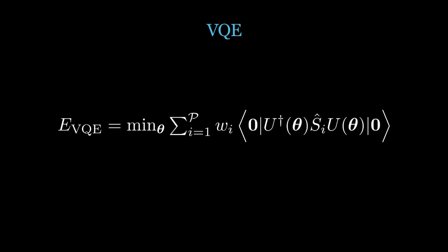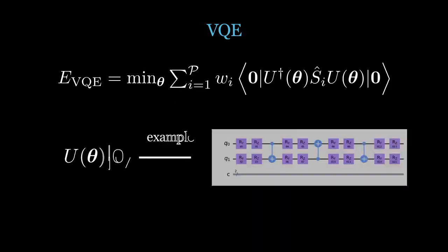The Pauli strings are then measured over our parametrized ANSATZ, which is a quantum circuit composed of rotational and entangling gates.